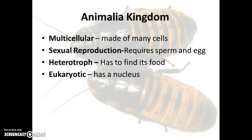The last kingdom is the animal kingdom — the kingdom that humans belong to. Of course, we are multicellular, made of many cells. We reproduce sexually, so a sperm and an egg are required to create another animal. All animals are heterotrophs, meaning there are no chloroplasts in any of our cells and we have to go out and find our food. Our cells are eukaryotic, so every animal cell has a nucleus.